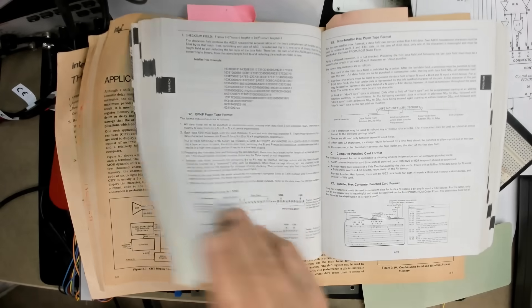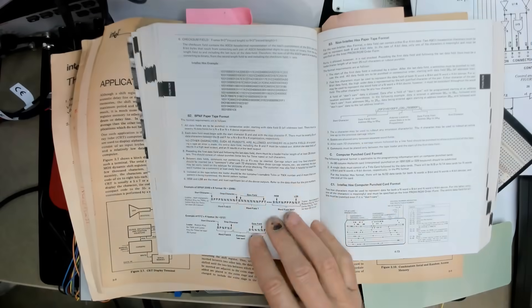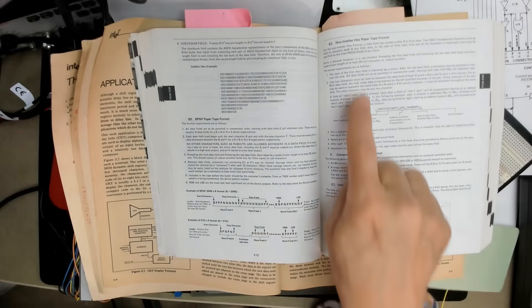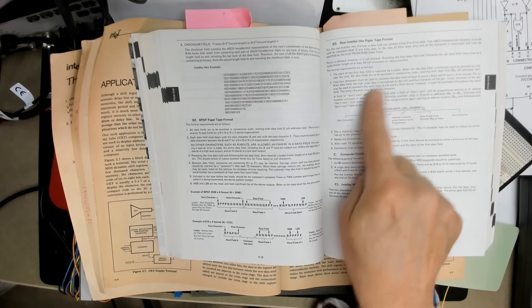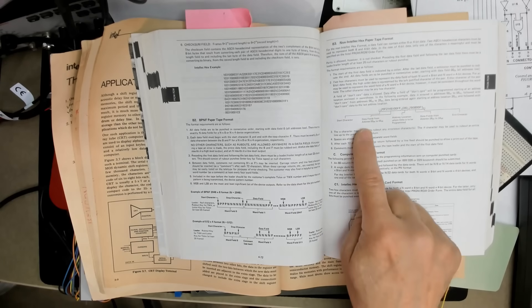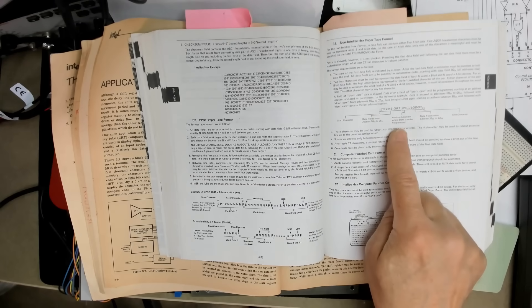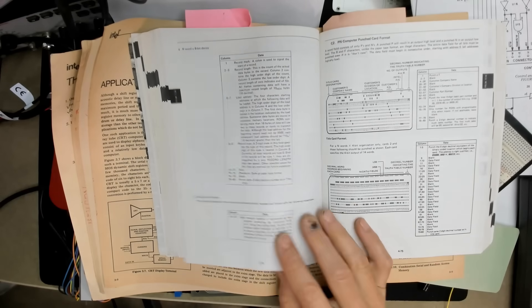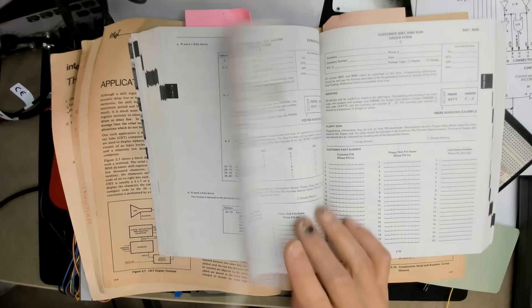So this catalog is from 1978, and Intel was accepting either BPNF or a non-Intel hex paper tape format, which just had the address and a start and finish character. And then they were also accepting their Intellect format.